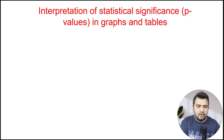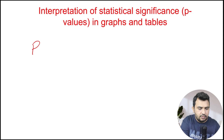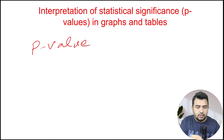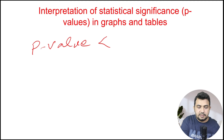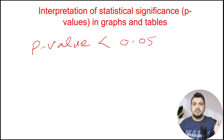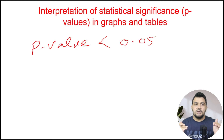Let's get started with statistical significance. Statistical significance is measured in terms of p-value. If the p-value is less than 0.05, the result would be significant. We must know that if the p-value is less than 0.05, it is significant. Often people get confused about the less than or greater than sign.